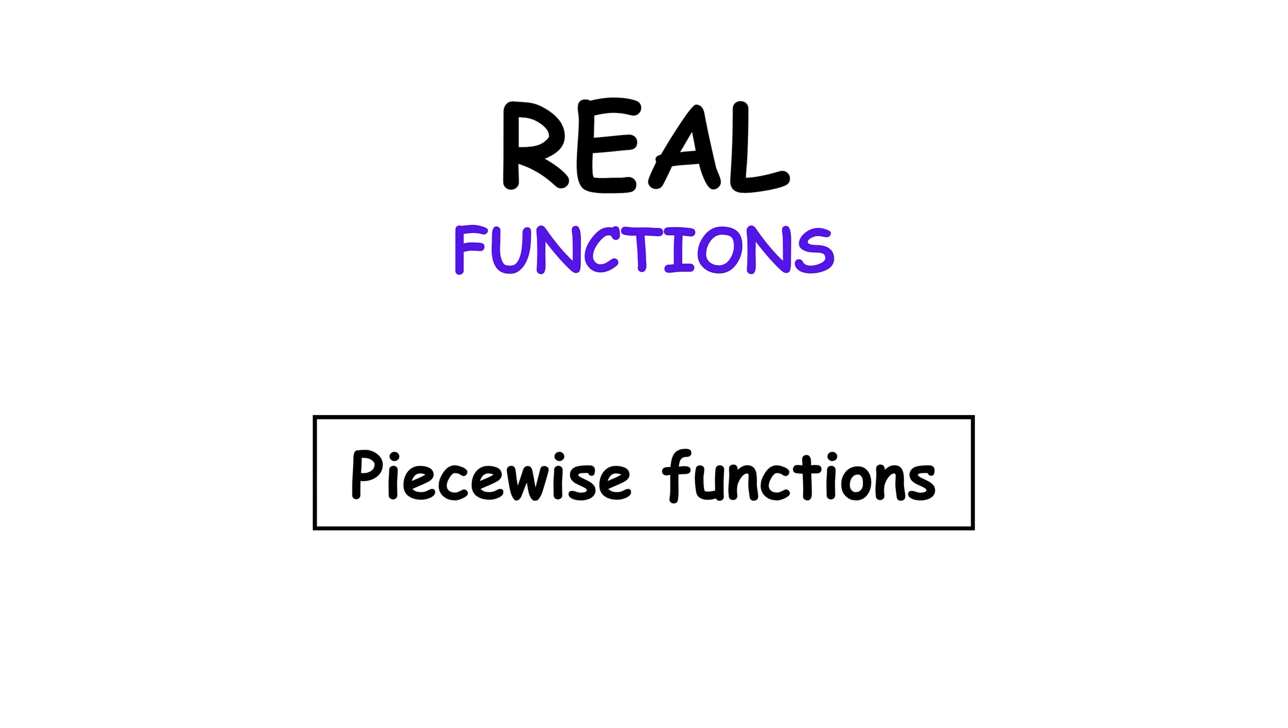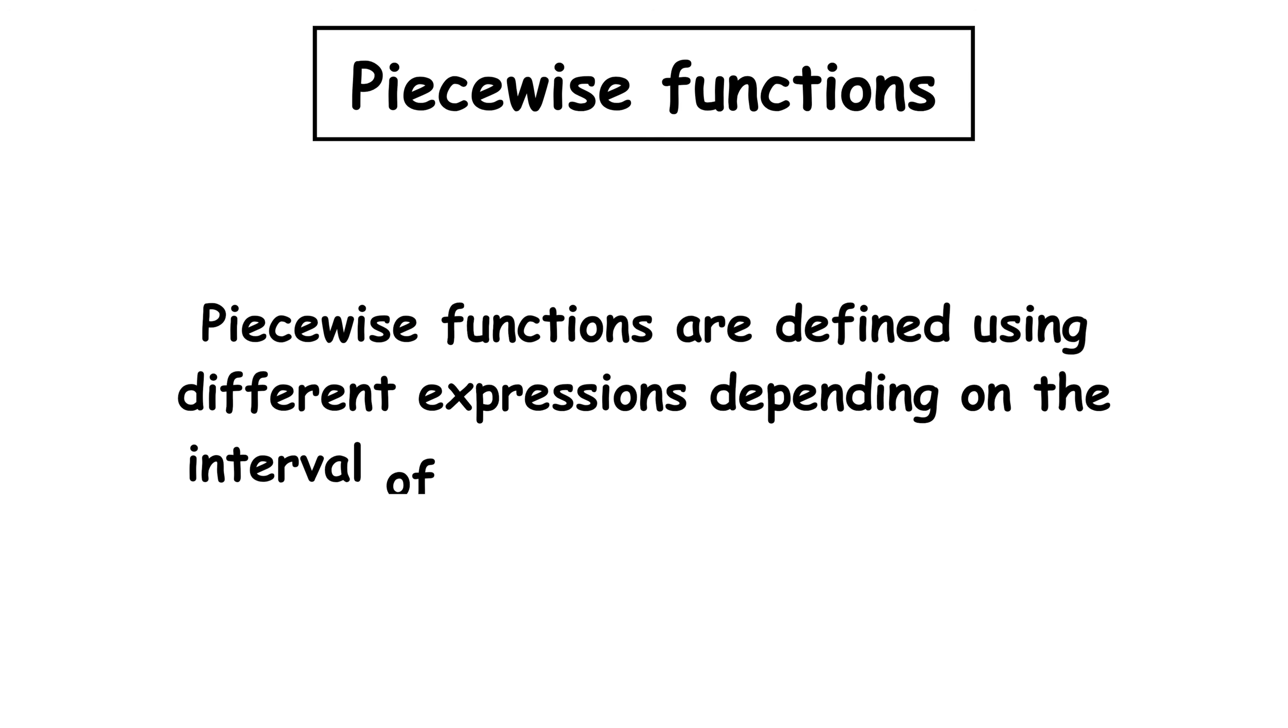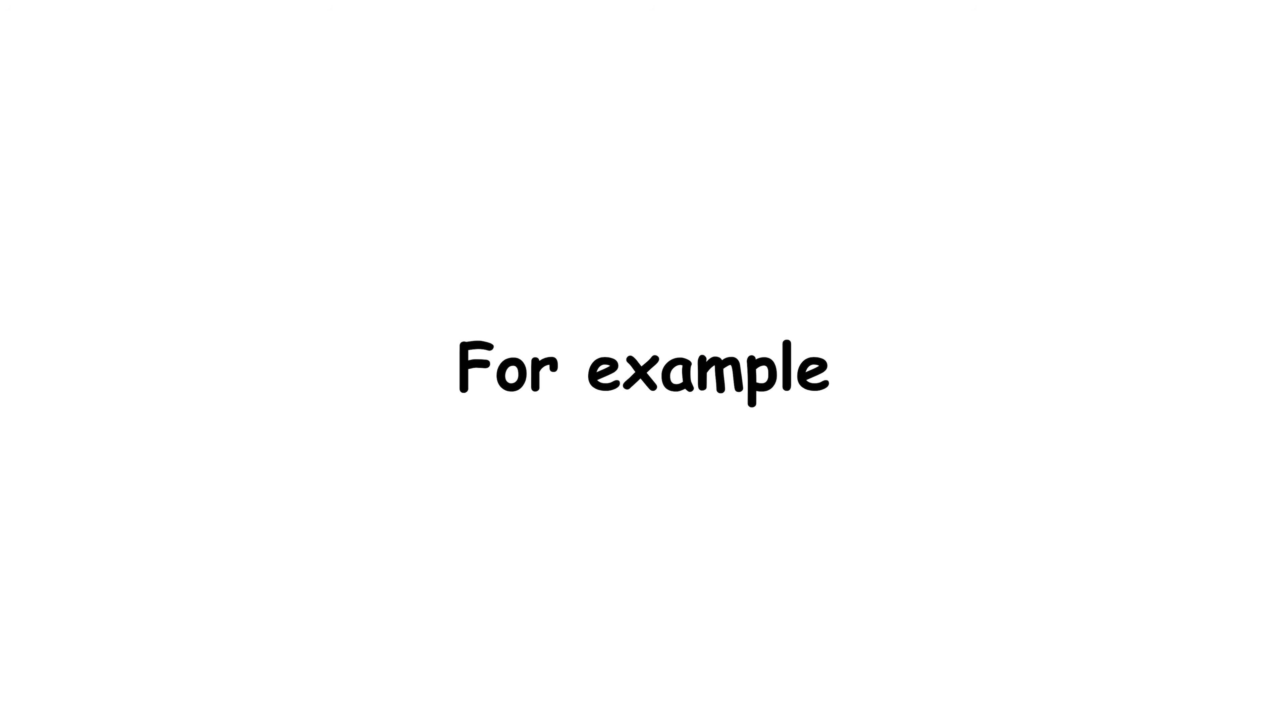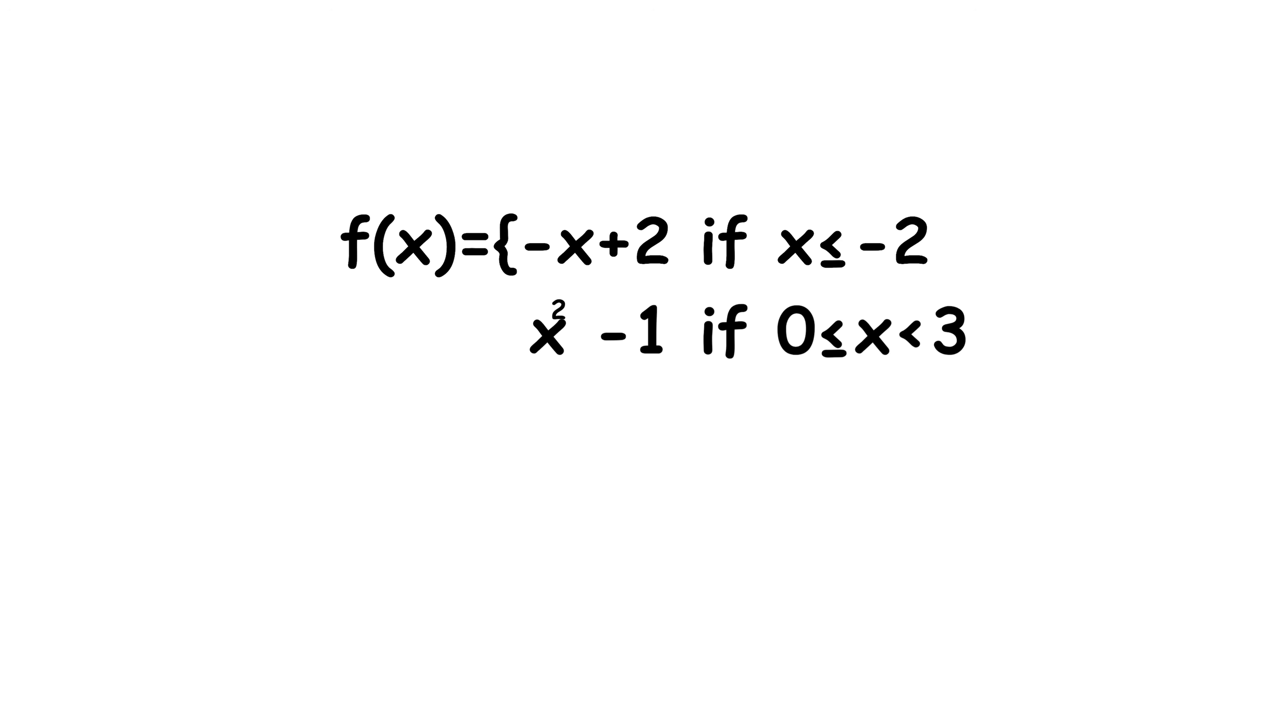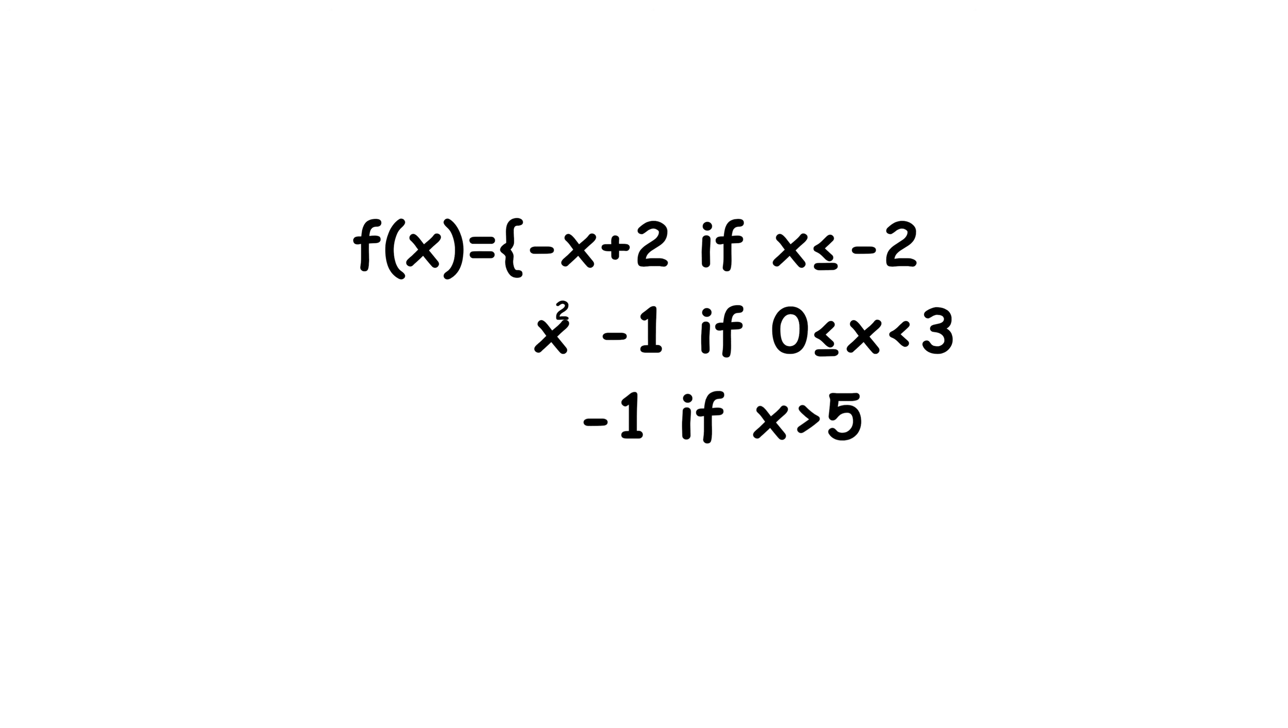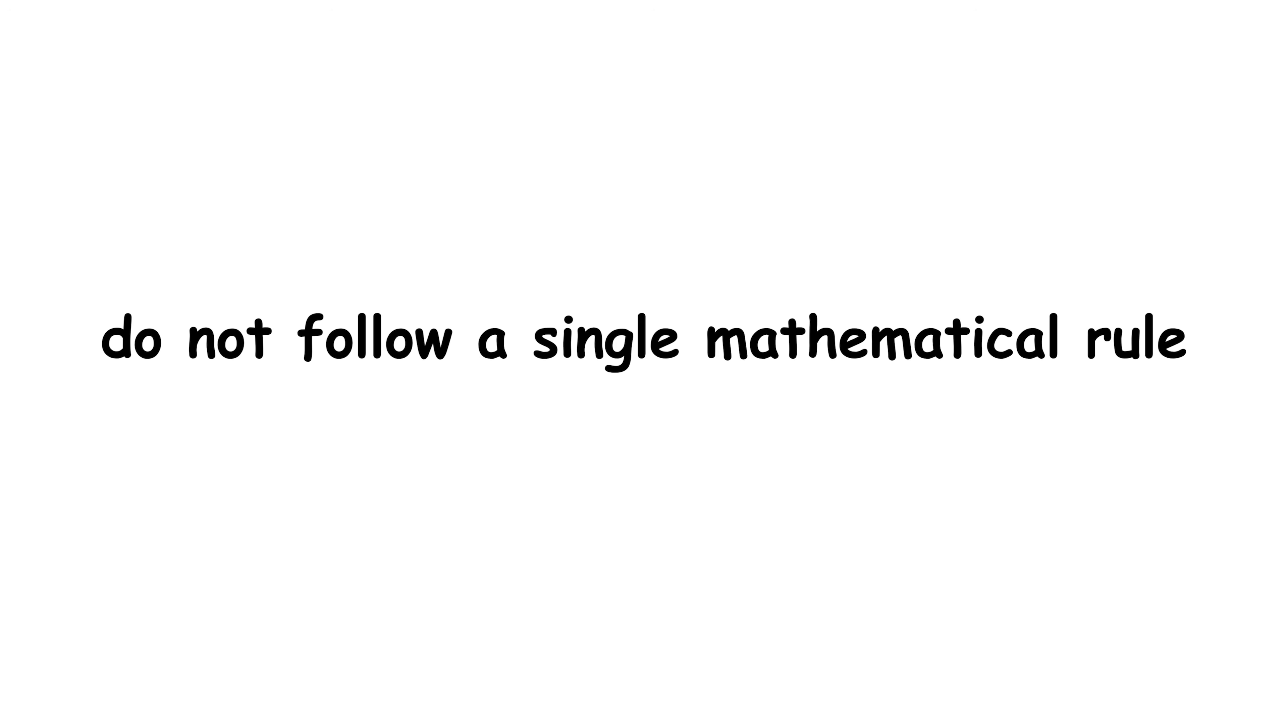Piecewise functions are defined using different expressions depending on the interval of the domain in which x falls. This means that the value of the function changes abruptly depending on the input range. For example, f of x equals negative x plus 2 if x is less than or equal to negative 2, x squared minus 1 if 0 is less than or equal to x is less than 3, negative 1 if x is greater than 5. These functions allow for modeling real-world phenomena that do not follow a single mathematical rule.